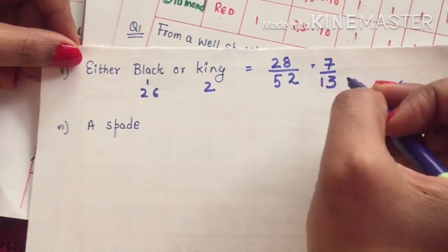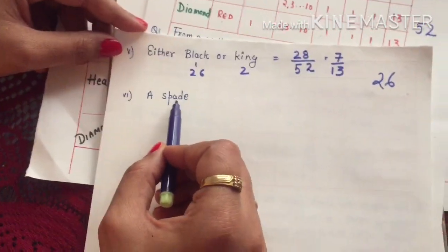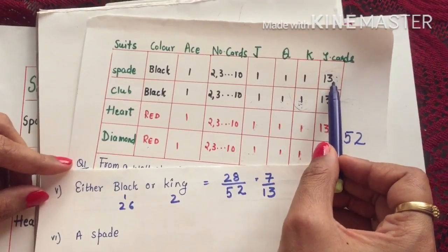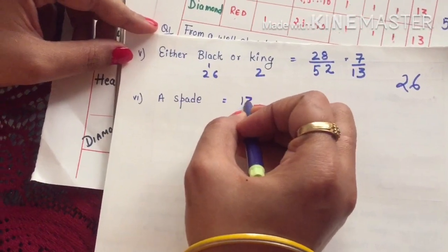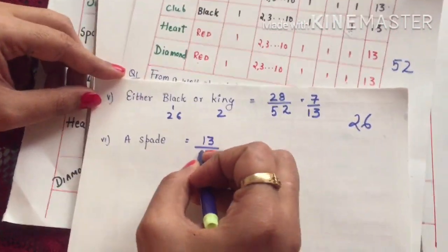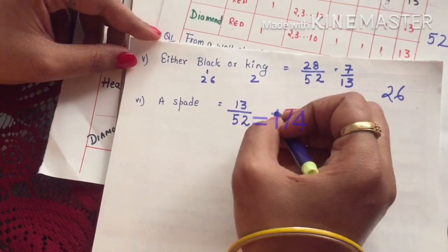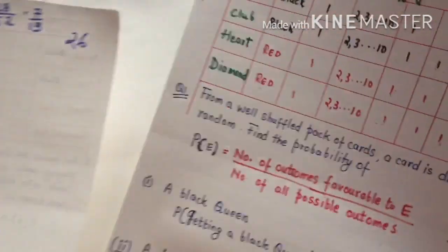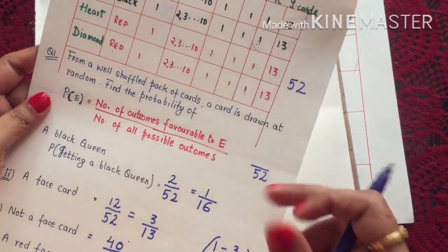One last example: probability of getting a Spade. There are 13 Spade cards in a pack, so the probability is 13/52, which simplifies to 1/4. This is how we solve simple problems on probability based on playing cards.